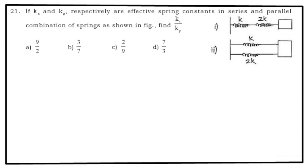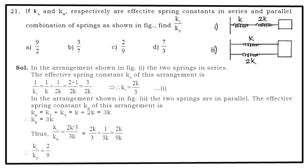Now this is a problem little complicated. Understand. Problem number 21. If Ks and Kp respectively are effective spring constant in series and parallel combination of springs as shown in the figure, then what is Ks/Kp? You can see the diagram. K and 2K connected in series, that will give me Ks = 2K/3. Why? Because 1/Ks = 1/K1 + 1/K2. If I adjust those terms, I get Ks = 2K/3.